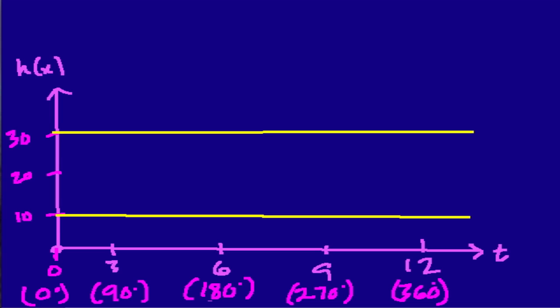And now I can plot. So at 0, the height was 10. So we're right here at 0. We need the pen tool. That's our first point. At 90, we're up to 20. At 6 seconds or 180 degrees, we're up to 30. And then at 9 seconds or 270, we're back down to 20. And that should definitely be moved over. We're going to line up with the 9 here. And then at 12 seconds, we're back down to 10.